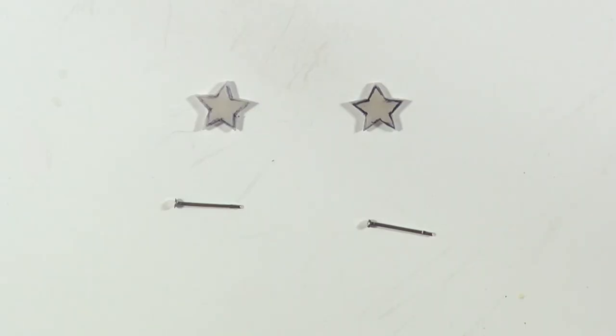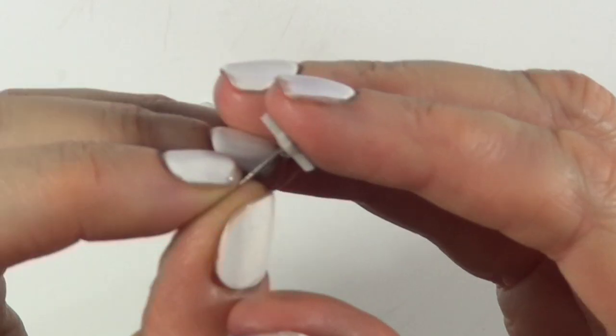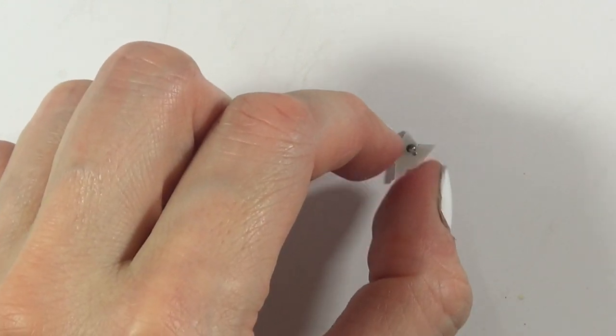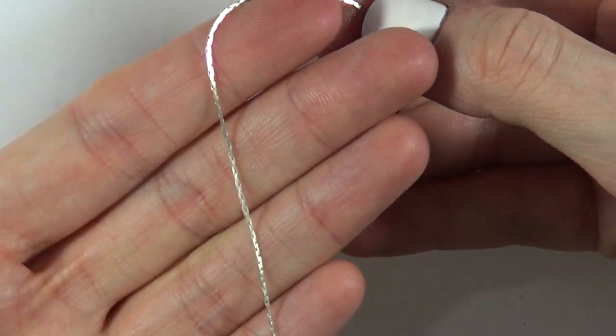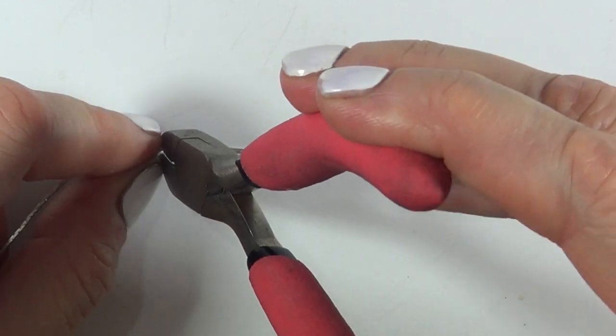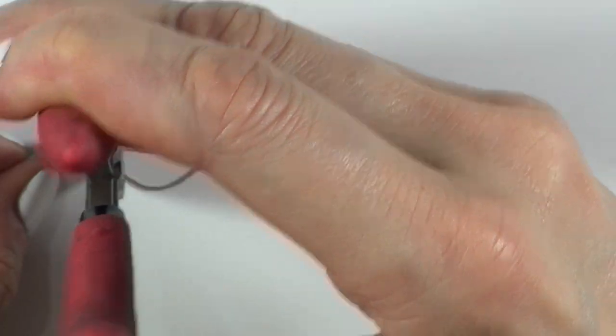I'm just going to be taking my tiny stars and I'm just going to glue my ear posts on the back with some super glue. Then I'm going to be taking a chain. I don't remember what they are called, but I'm just going to be cutting two equal pieces out of that.